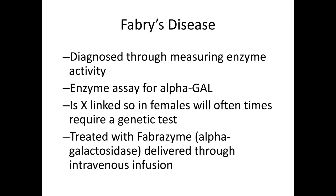Fabry's disease is diagnosed through measuring enzyme activity — specifically, an enzyme assay for alpha-galactosidase A is performed. It is typically X-linked, so in females, a genetic test is often required because with two X chromosomes, symptoms are often less severe than in male counterparts. It is treated with Fabrazyme, an alpha-galactosidase enzyme delivered intravenously through infusion.